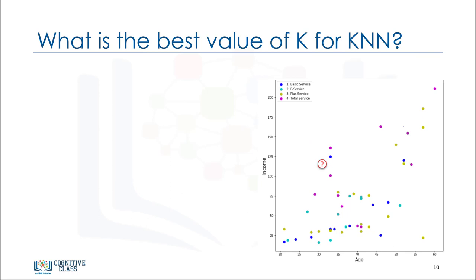Assume that we want to find the class of the customer noted as question mark on the chart. What happens if we choose a very low value of k? Let's say k equals 1. The first nearest point would be blue, which is class 1. This would be a bad prediction, since more of the points around it are magenta or class 4. In fact, since its nearest neighbor is blue, we can say that we captured the noise in the data, or we chose one of the points that was an anomaly in the data. A low value of k causes a highly complex model as well, which might result in overfitting of the model.